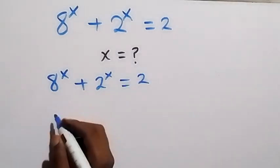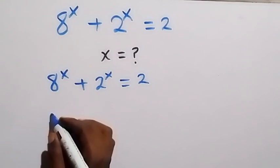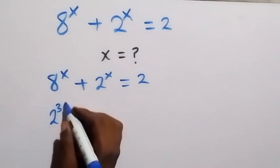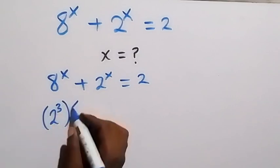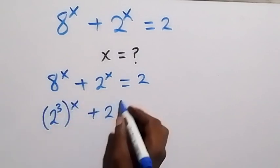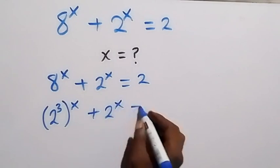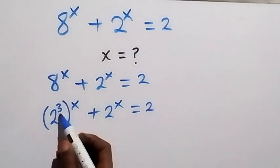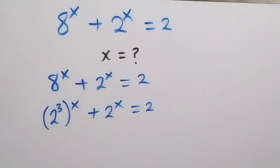From here, let's write it to base of 2. So we have 2 to the power of 3, then raised to power x, plus 2 to the power of x equals to 2. Note that 2 cubed is the same thing as 2 times 2 times 2, which is 8.